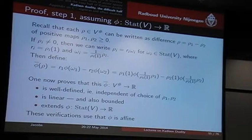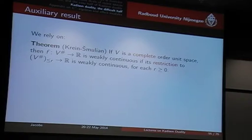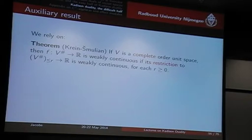This is where the Krein-Smulian theorem comes in. The Krein-Smulian theorem says the following: if I have a complete order unit space — here completeness is important — then in order to prove that a function from V-sharp to R is weakly continuous, it's sufficient to prove this for each ball of elements of norm below R. So that makes life a bit easier: we only have to do this for the restricted subset.